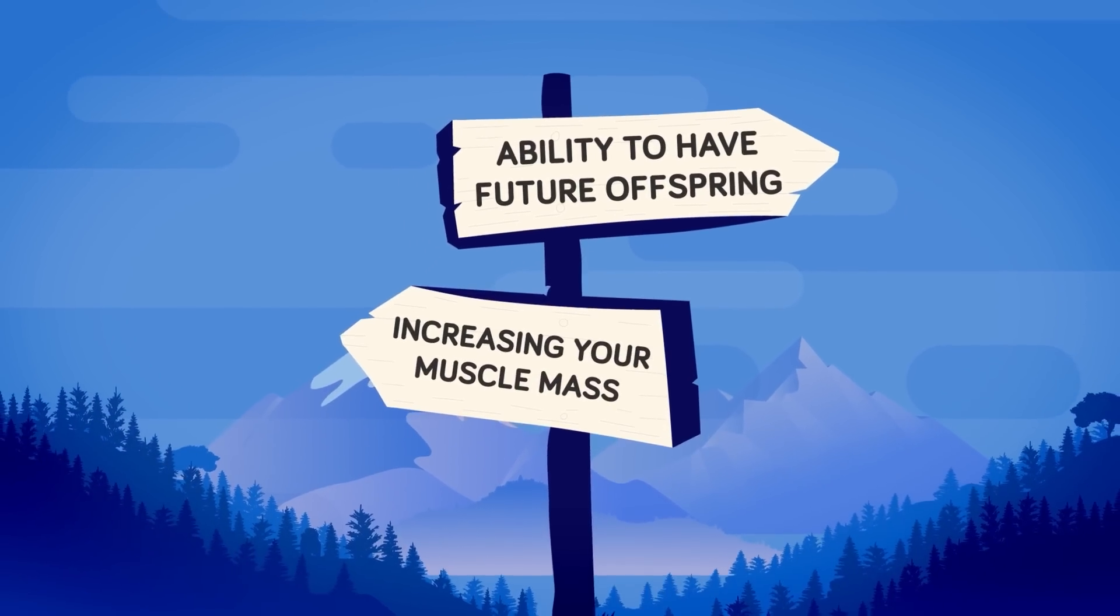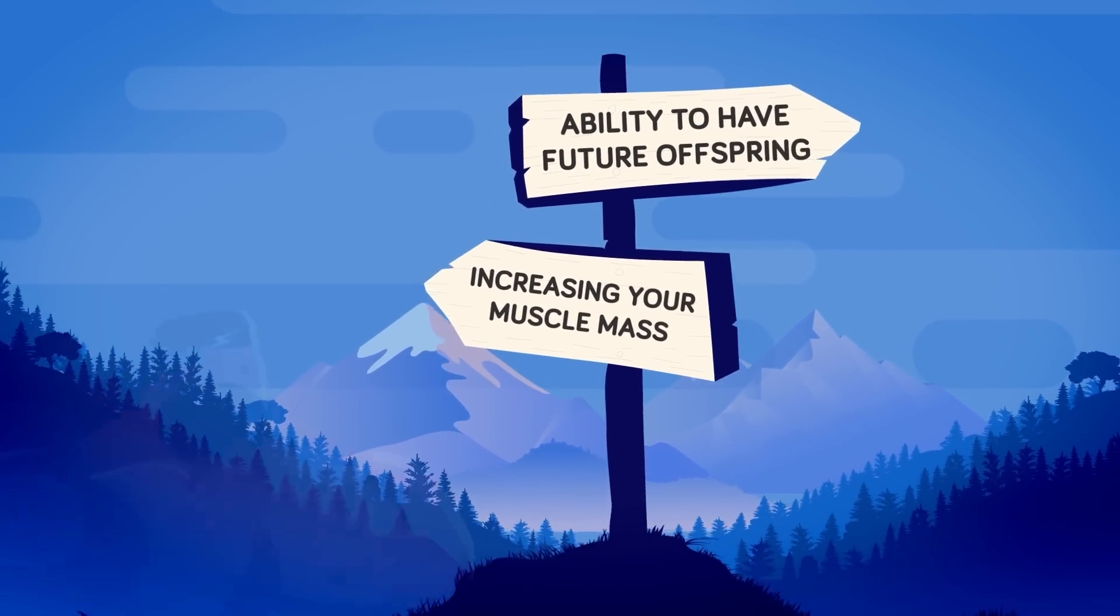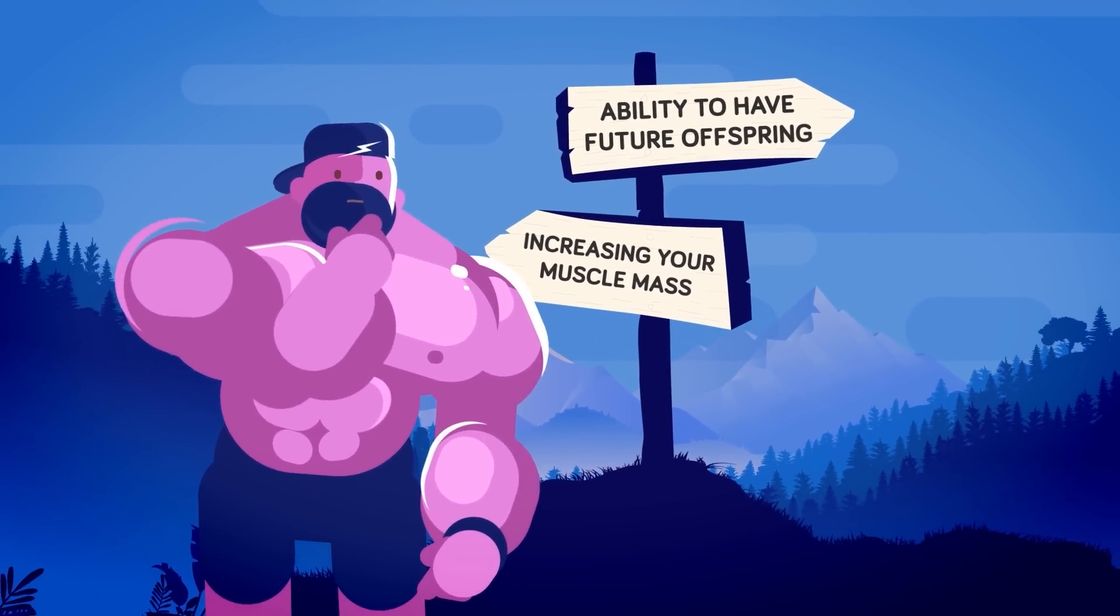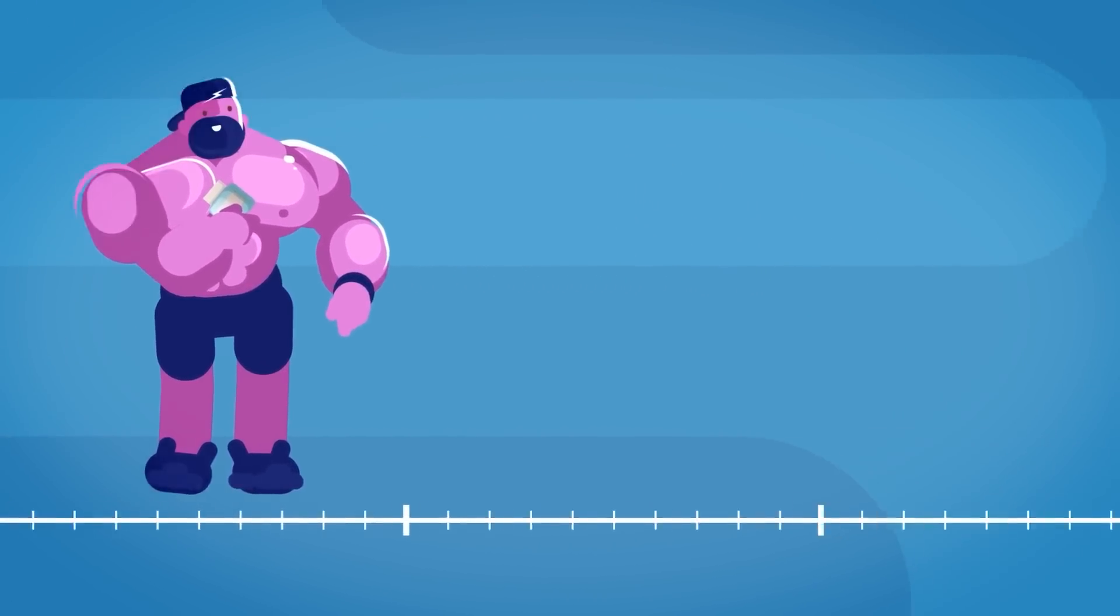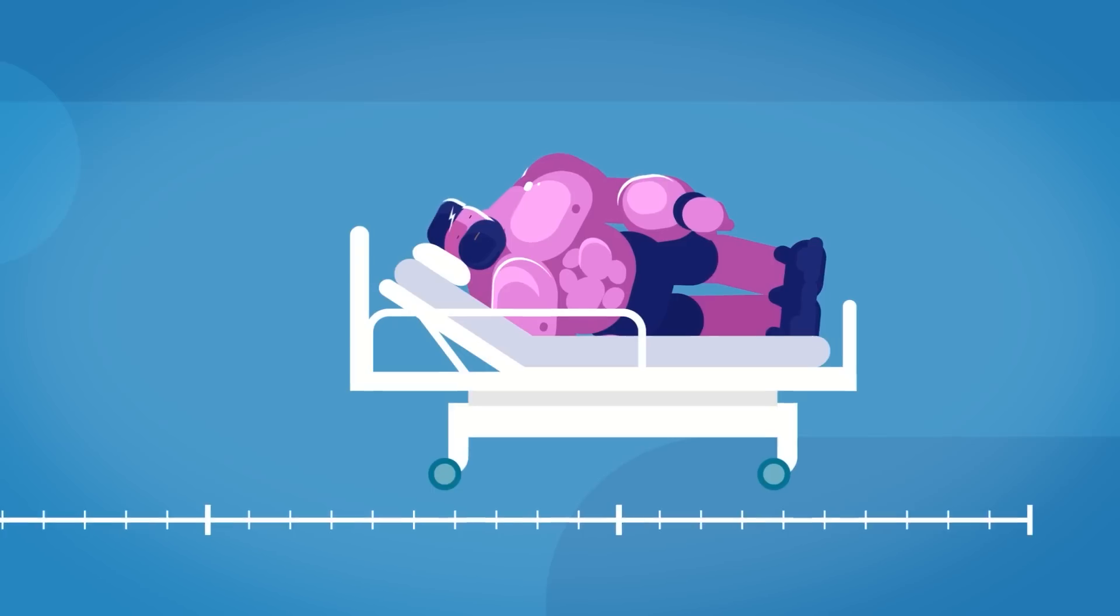But for many younger athletes who start taking steroids, they don't know the risks or consequences these drugs have on their bodies later in life. Some of the most severe consequences of using anabolic androgenic steroids are the long-term health effects they have.